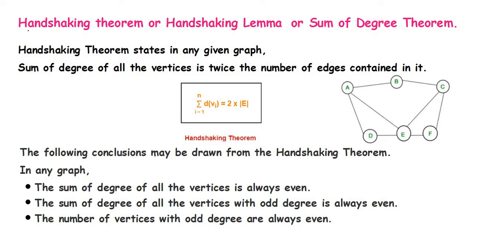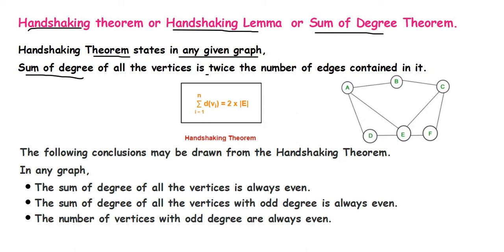Coming to the handshaking theorem, or handshaking lemma, which is also called the sum of degrees theorem. The handshaking theorem states that in any given graph, the sum of degrees of all the vertices is twice the number of edges contained in it.